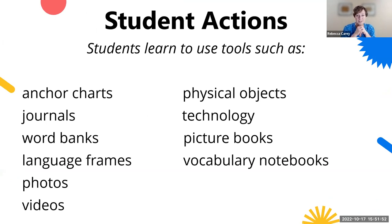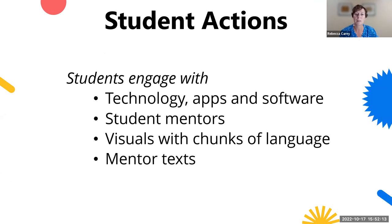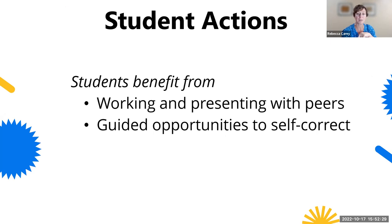Now for student actions: students can learn to use tools such as anchor charts, journals, word banks, language or sentence frames, photos, videos, physical objects, technology, picture books, and vocabulary notebooks — these are all skills students can develop to be active in the classroom. Students can also engage with technology, student mentors, visuals with chunks of language, and mentor texts. Working with and presenting with peers or groups is a wonderful way for students to engage with English and engage with content. And guided opportunities to self-correct is itself a skill to learn — that's an action students can take.